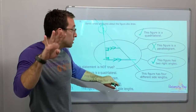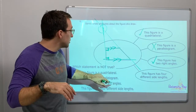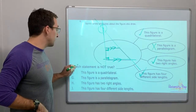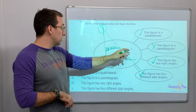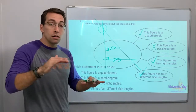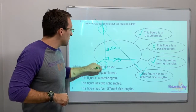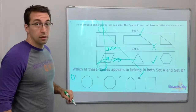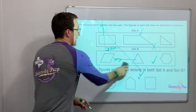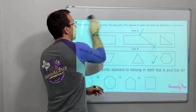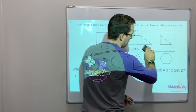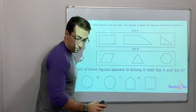This figure has two right angles — that's correct, we highlighted those. This figure has four different side lengths — yes, that is correct too. Which statement is not true? 'This figure is a parallelogram' — wrong, not true. That is our answer.